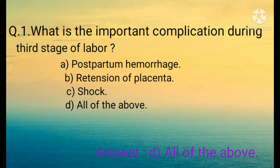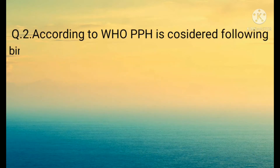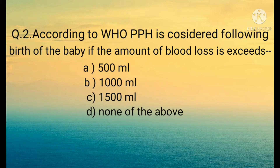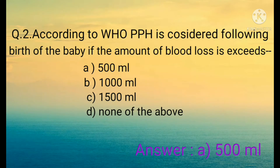Question number two: According to WHO, PPH (postpartum hemorrhage) is considered following the birth of the baby if the amount of blood loss exceeds: A) 500 ml, B) 1000 ml, C) 1500 ml, D) None of the above. The correct option is A) 500 ml. Following the birth of the baby, if the amount of blood loss becomes more than 500 ml, it is considered as PPH.